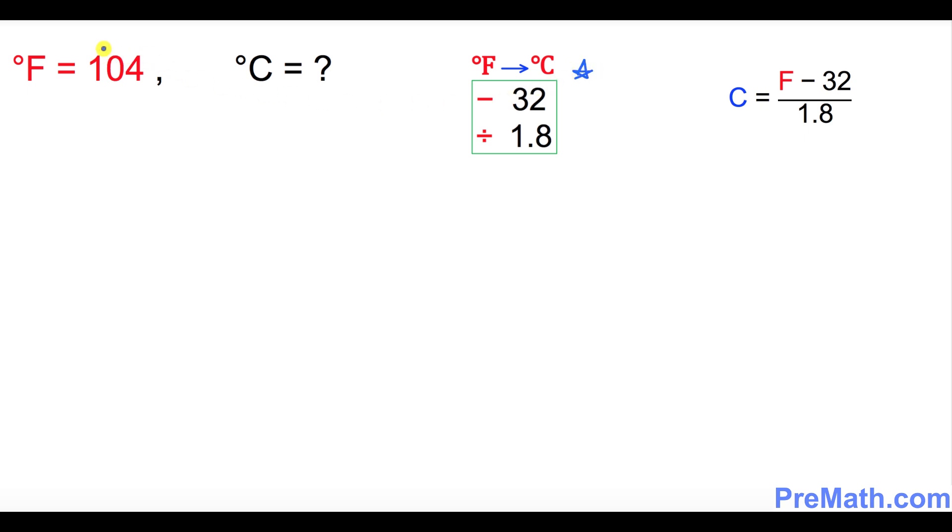So let's go ahead and put down whatever our F value is, 104. This time we're going to subtract 32, so put down minus 32, which is going to give you 72. And then the next step is divide it by 1.8 and that's going to give you 40. So C equals 40 degrees is our answer.